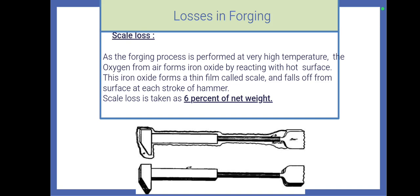That is, the heated work piece reacts with the oxygen from air and forms a thin film of iron oxide on the outer surface of the work piece. This thin film of iron oxide is called scale.